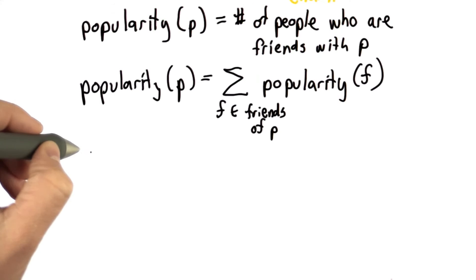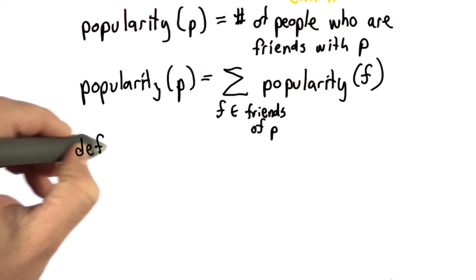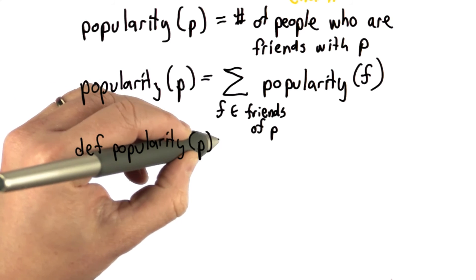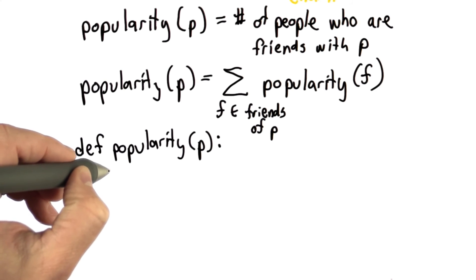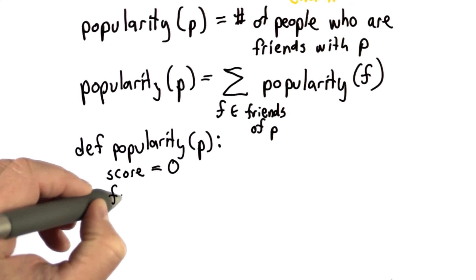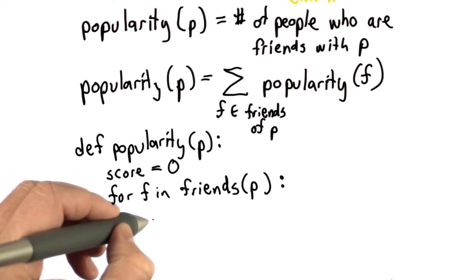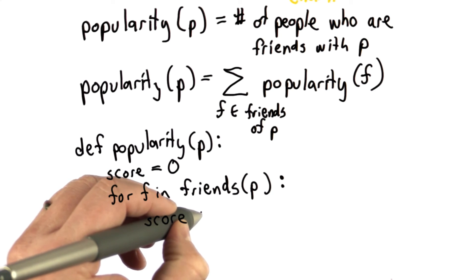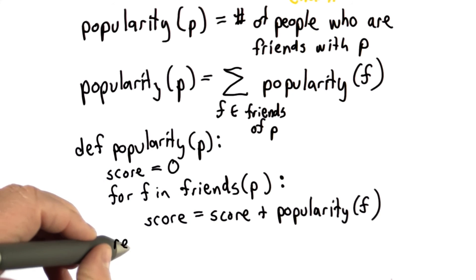We're thinking of the popularity of a person P. Let's assume we have a function that gives us the friends. So we're going to start with the score as zero. We're going to loop through the friends. And for each friend, we're going to add to P's score the popularity score of the friend. And we'll return the score as the result.